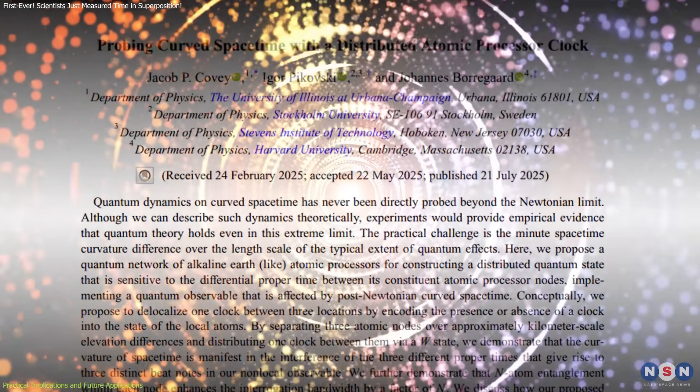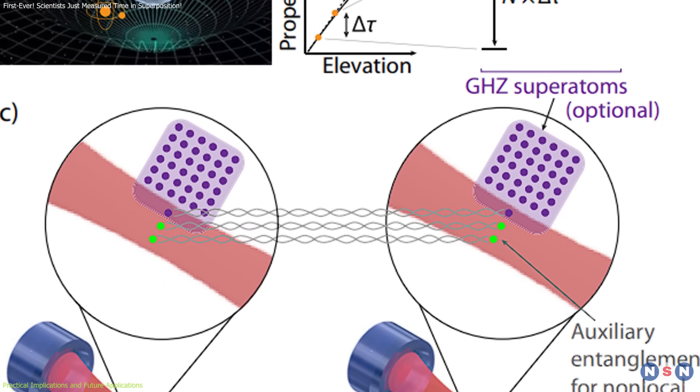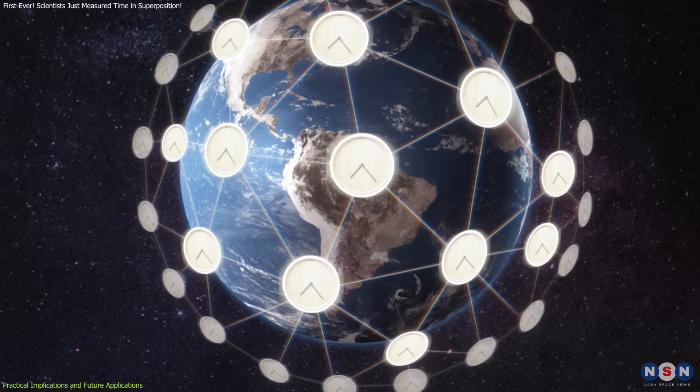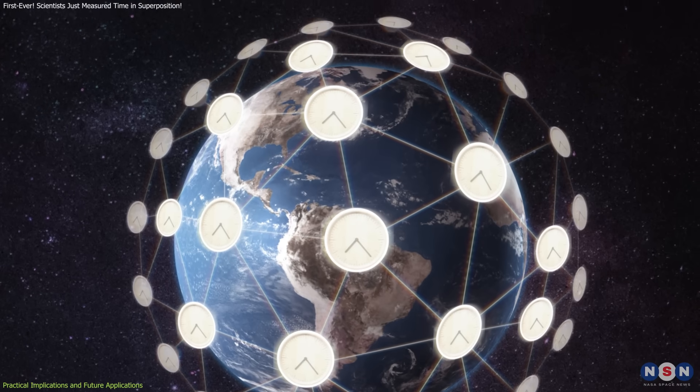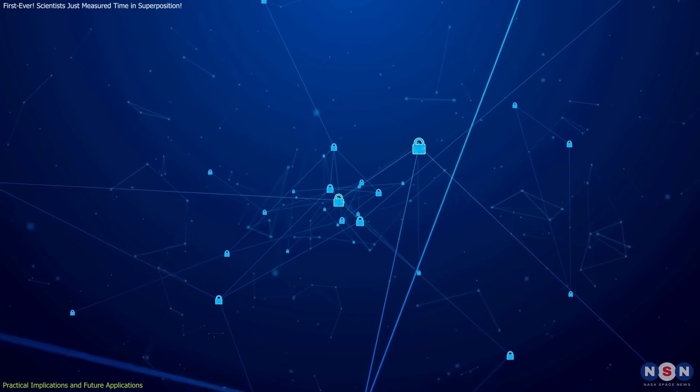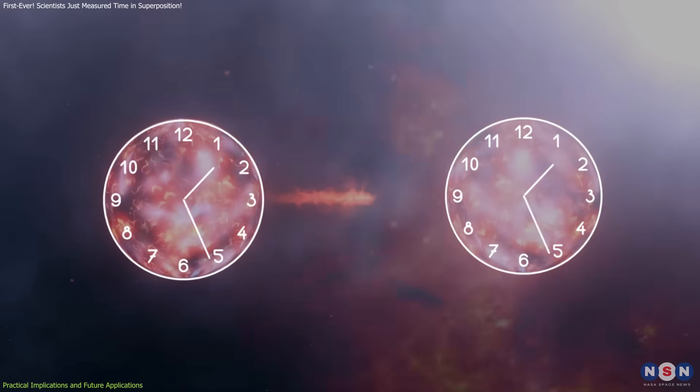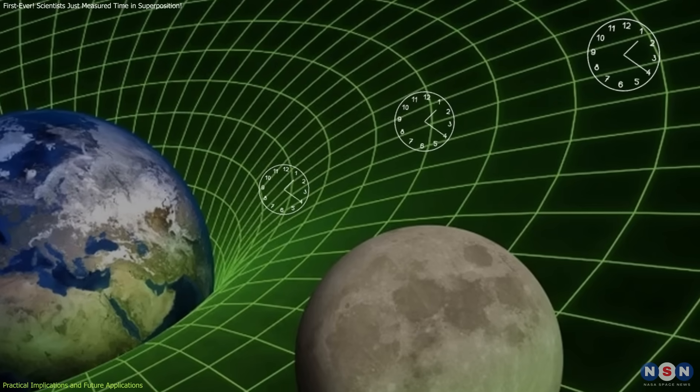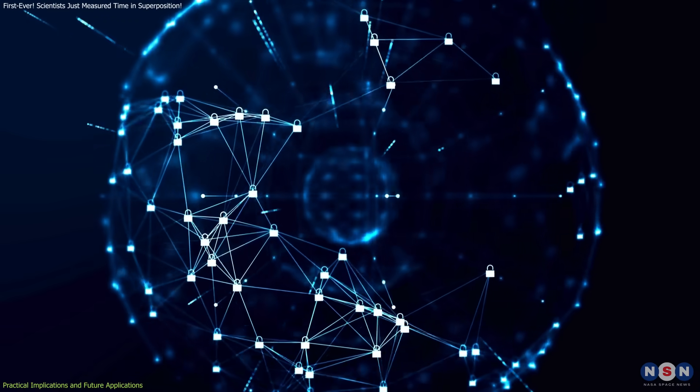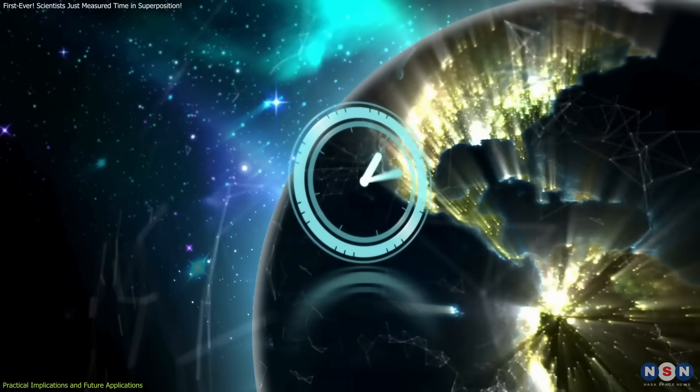Beyond theoretical insight, this experiment has practical and technological implications that make it even more compelling. First, it showcases a new use for quantum networks. These systems are often discussed in the context of building secure communication channels, but here they're used for a completely different purpose: precision measurement of relativistic effects on quantum states. This expands the role of quantum networks from functional infrastructure to fundamental scientific instrumentation.